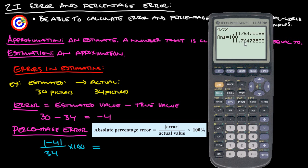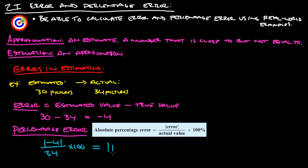So we get a percentage error of 11 point, let's round it to 11.8%. Again, that's just all off of this example here.